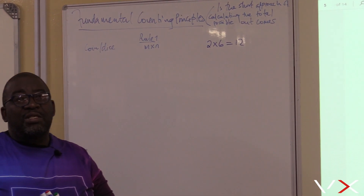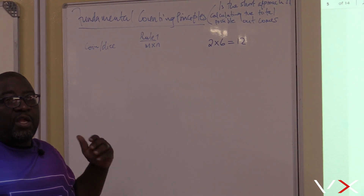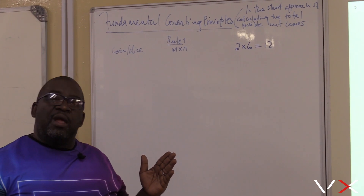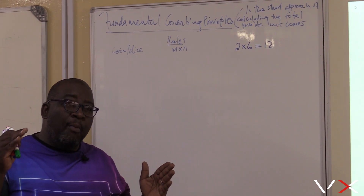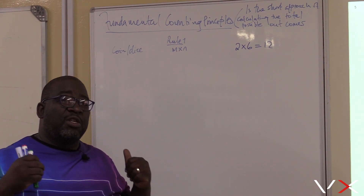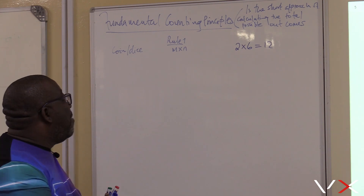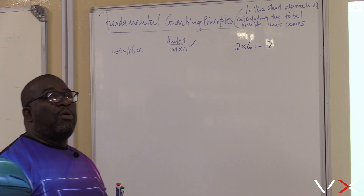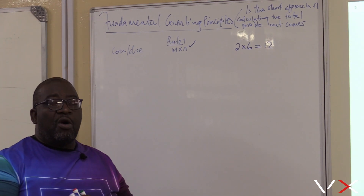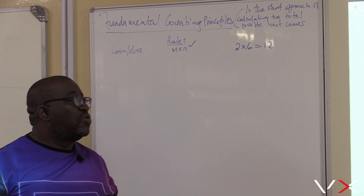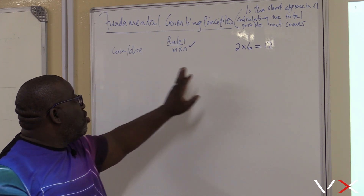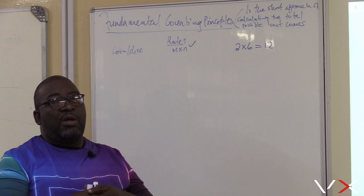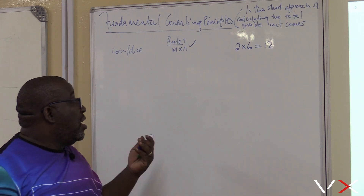What is this saying to us? If one event can be done in N ways and another event can be done in M ways, then the possible outcomes would be M times N. This is the rule we use to find the possible outcomes — a shorter version. For a coin there are two, for a dice there are six, so the possible outcomes will be 12.